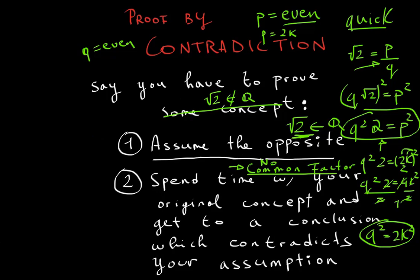At the end, always write QED to show you have ended your proof. I hope this video made it clear how proofs by contradiction work, what the steps are, and how you can use this strategy to prove some very powerful theorems later on. I hope this video was helpful.